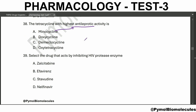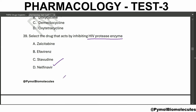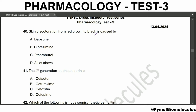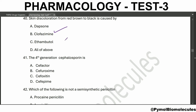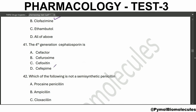The tetracycline with the highest anti-leprotic activity is minocycline. Minocycline is also highly potent. Select the drug that acts by inhibiting the HIV protease enzyme - that is nelfinavir. Skin discoloration from red-brown to black is caused by clofazimine. Fourth generation cephalosporin is cefepime - the fourth generation cephalosporin comes under the prefix cepi.